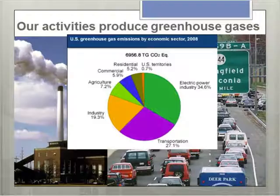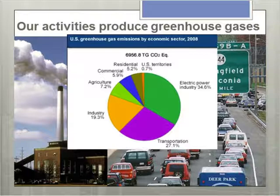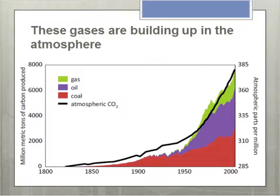We produce an enormous amount of heat-trapping or greenhouse gases. In the U.S., about a third comes from the electric power industry, just under a third from transportation, and the rest from various industry, agriculture, and heating and cooling our homes and buildings. These gases are building up in the atmosphere. We have a pretty good record of how much coal, gas, and oil was burned since the Industrial Revolution because we had to pay money for it. We've been burning increasing amounts of fossil fuels over time, and the amount of carbon dioxide in the atmosphere, as indicated by the black line, has been going up, causing our climate to change.